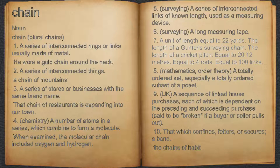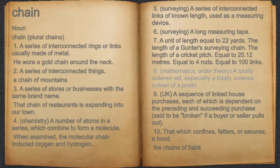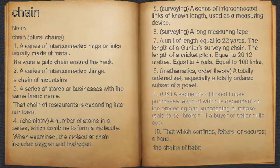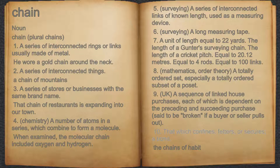The length of a cricket pitch. 8. Mathematics. Order theory. A totally ordered set, especially a totally ordered subset of a poset. 9. UK. A sequence of linked house purchases, each of which is dependent on the preceding and succeeding purchase, said to be broken if a buyer or seller pulls out. 10. That which confines, fetters, or secures; a bond. For example, the chains of habit.